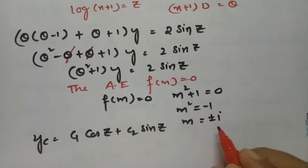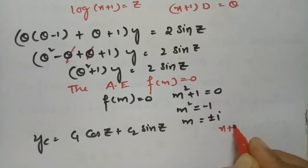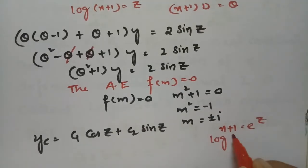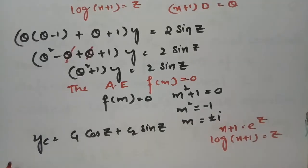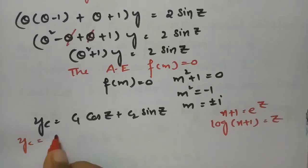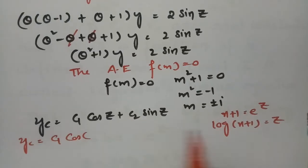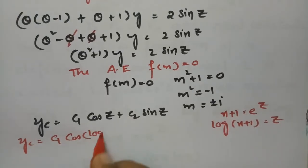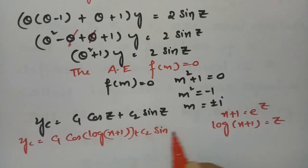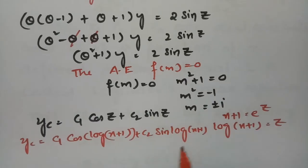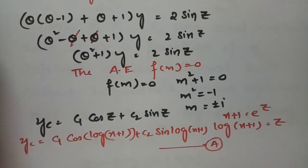Then y_c will be c₁·cos z + c₂·sin z. If we transform into the normal form, since (x + 1) = e^z and log(x + 1) = z, substituting back: y_c = c₁·cos(log(x + 1)) + c₂·sin(log(x + 1)). This is equation (a), the complementary factor.